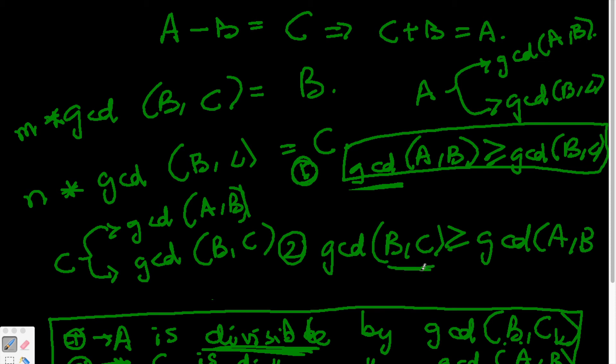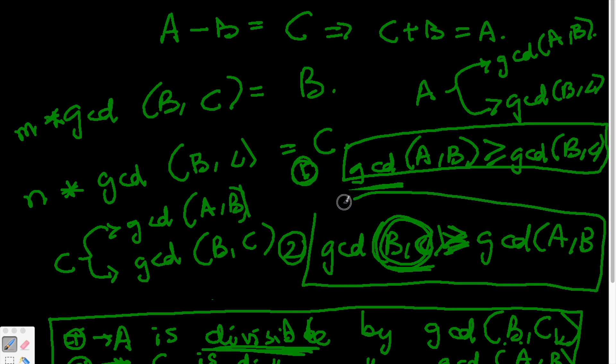This in fact tells us that this quantity is greater than gcd(A,B). The second equation and the first equation are contradicting each other except for a single point, which is equality.